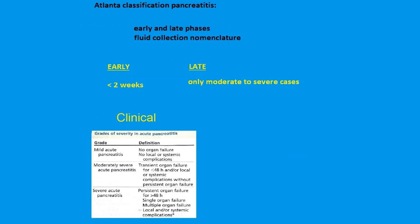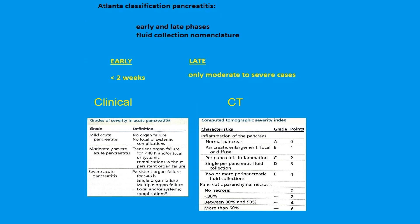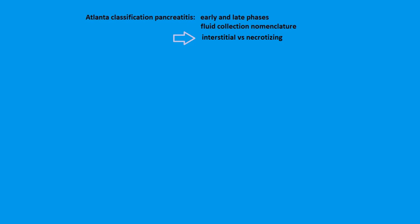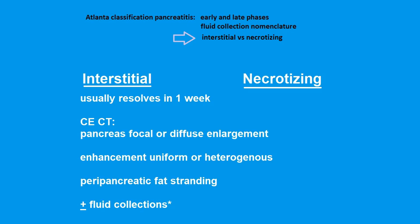There are two tables — just be aware of them; don't commit them to memory, just know they exist in case it comes up in conversation with referring clinicians. There is a CT grading for pancreatitis. Interstitial edematous pancreatitis is the garden variety we see every day — usually resolves in a week, with the classic enlarged pancreas, various degrees of enhancement, and peripancreatic inflammation with possible fluid collections.